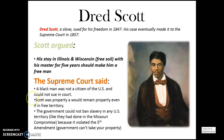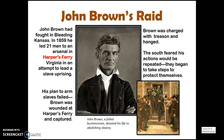John Brown devoted his whole life to abolishing slavery. He had fought in Bleeding Kansas, and in 1859 he led 21 men to an arsenal in Harpers Ferry, Virginia, in an attempt to lead a slave uprising. His plan to arm slaves failed; Brown was wounded at Harpers Ferry and captured. He was charged with treason and hanged. The South feared his actions would be repeated and began to take steps to protect themselves.